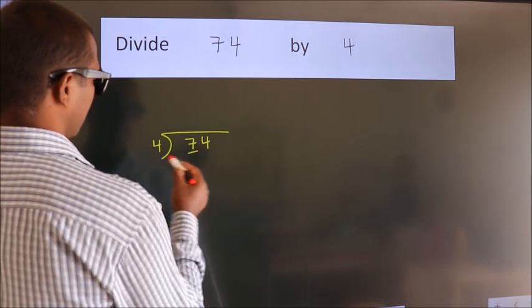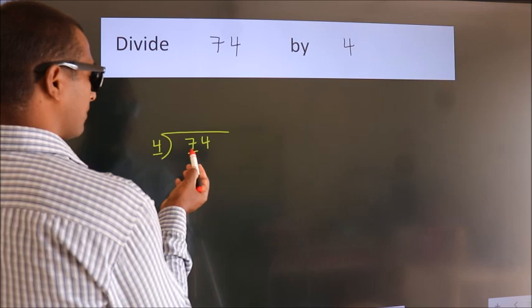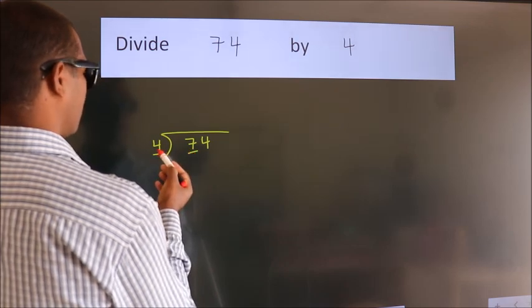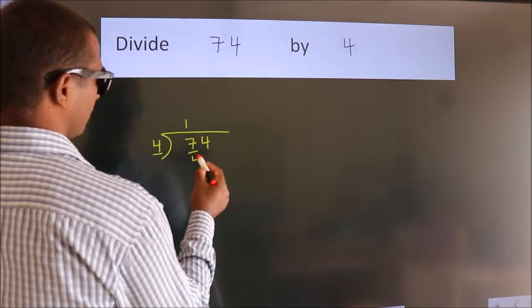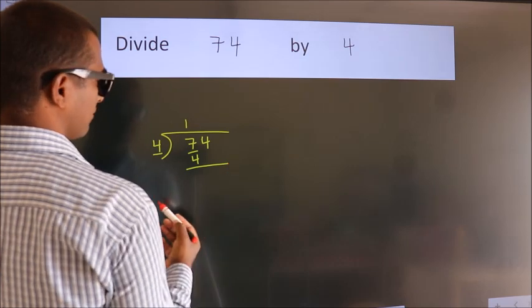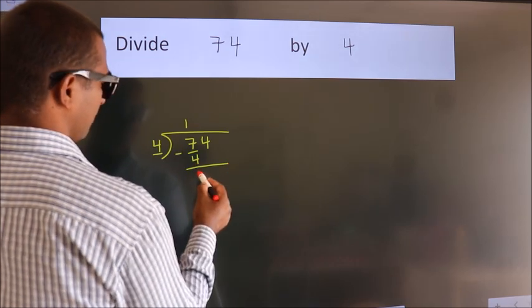Here we have 7, here 4. A number close to 7 in the 4 table is 4 once, which is 4. Now we should subtract. We get 3.